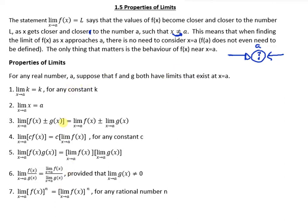Here are a couple properties we're going to take a look at and embed into the actual questions. For any number a, suppose that f and g both have limits that exist at x=a. First, the limit of k equals k for any constant k. Second, the limit of x equals a. Third, if we want the limit of some function plus or minus another function, we just have to take the limit of the first thing, the limit of the second thing, and then add them.